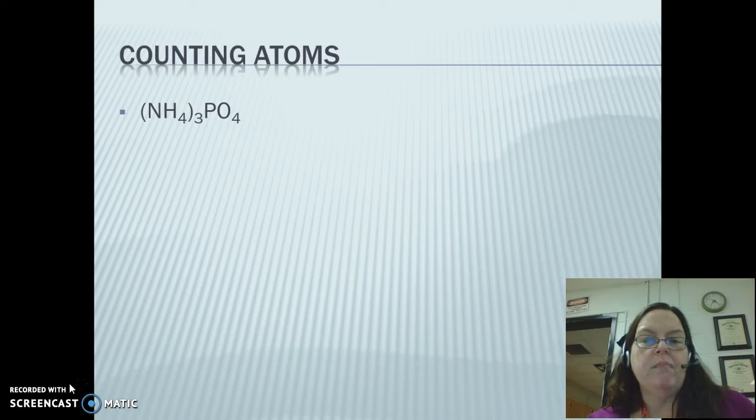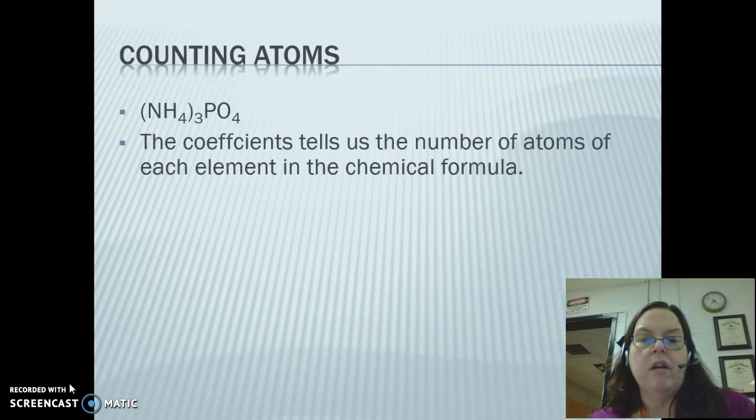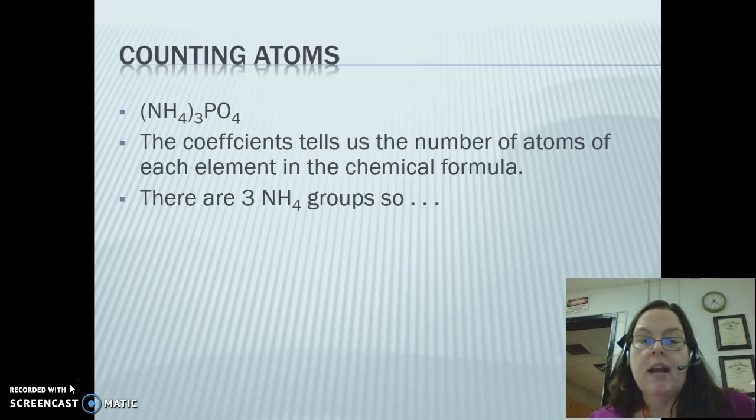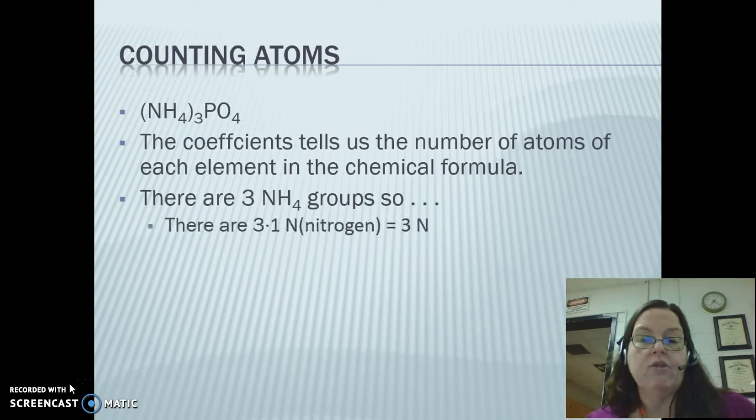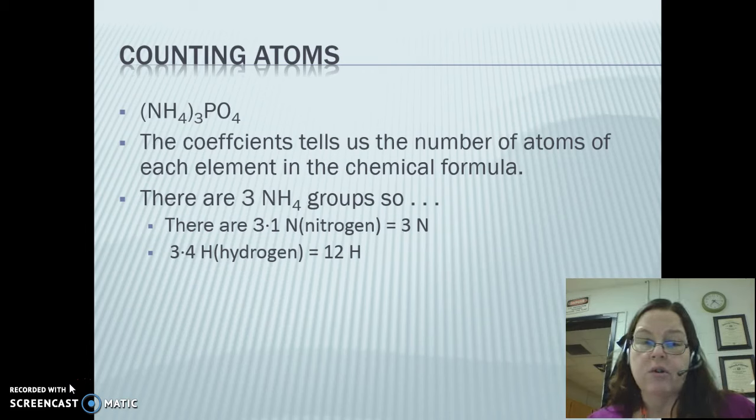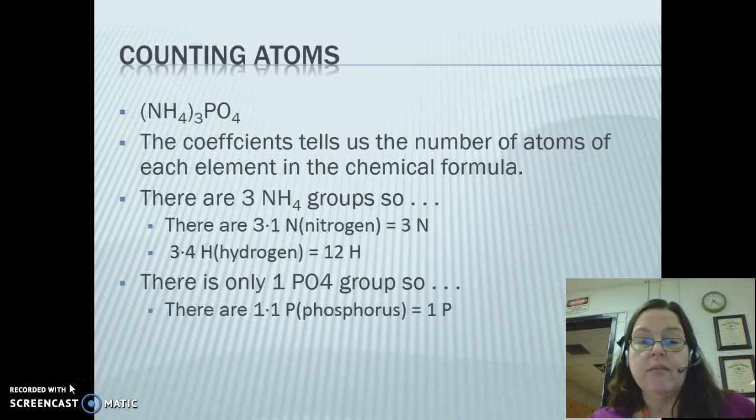We have a formula, NH₄₃PO₄. What does all that mean? We know that the coefficients tell us the number of atoms of each element in the chemical formula, so the numbers talk about the number of atoms. If we look at that and dissect it, there are three NH₄ groups, so that means there are three times one nitrogen, so there's one nitrogen in each NH₄. There are three total groups, so there are three nitrogens. There are three times four hydrogens, or 12 hydrogens, because there are four hydrogens in each group. And then there's only one PO₄ group, so that means there's only one times one phosphorus, or one phosphorus atom, and there's one times four oxygens because there's four oxygens in a PO₄ group.